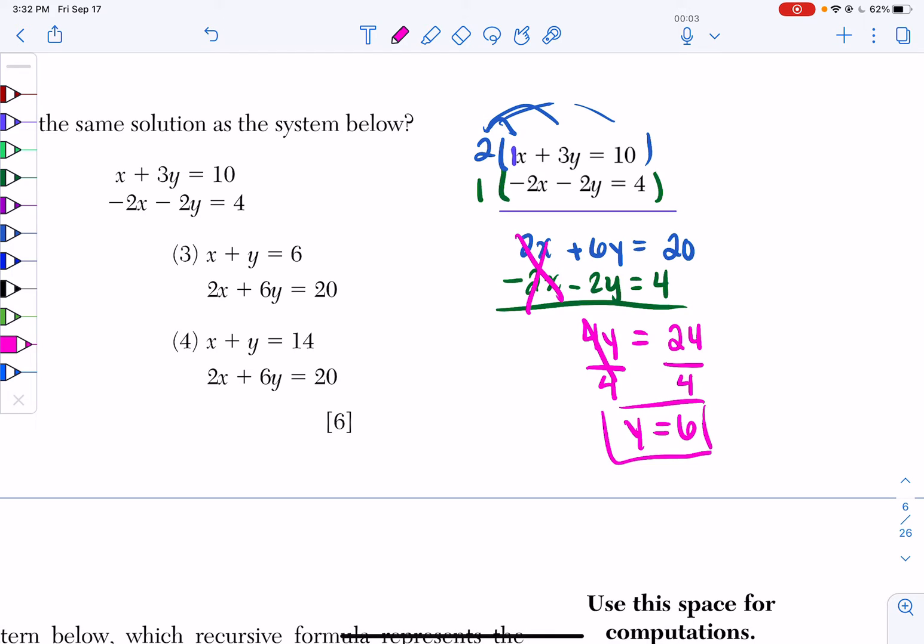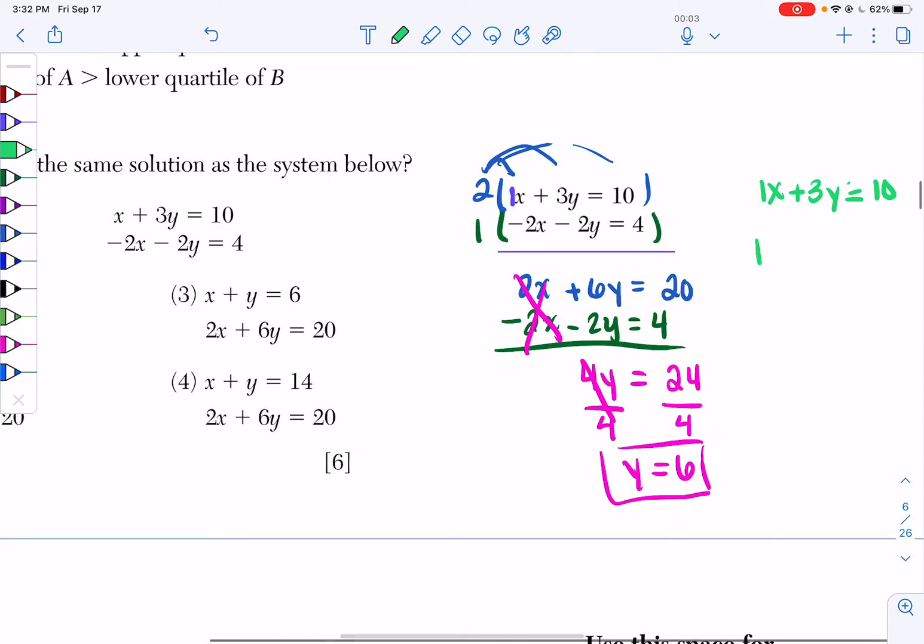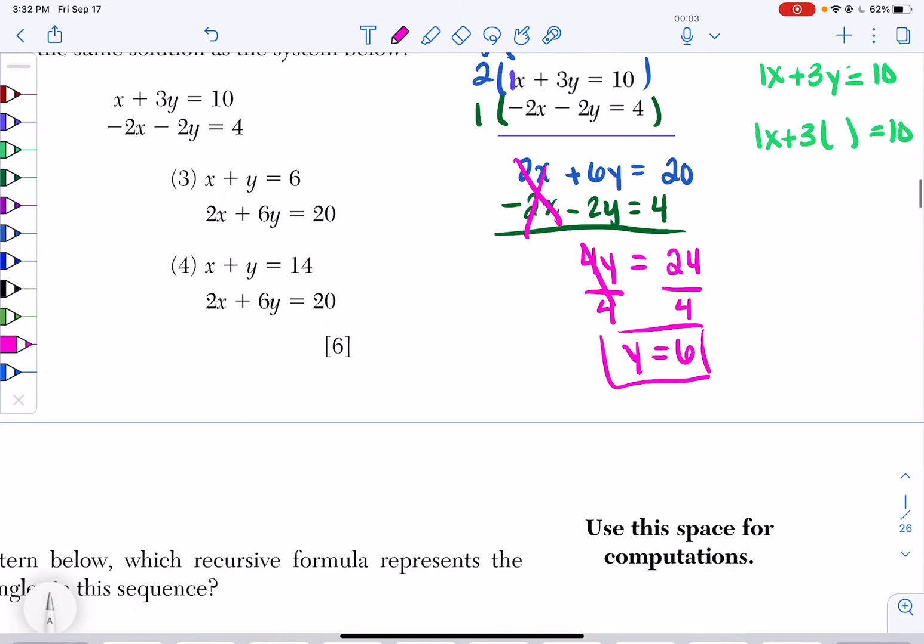Now what we need to do is solve for x. So you're going to pick a nice equation. I'm going to pick the first one where it says 1x plus 3y equals 10. We know y is 6, so I have 1x plus 3 times 6 equals 10. 3 times 6 is 18, so I have 1x plus 18 equals 10.